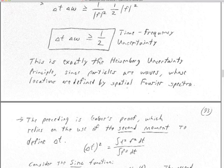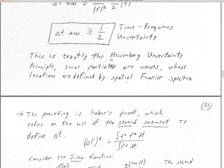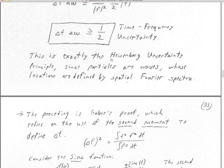This also explains why, if we take enough time span — auto-correlate or cross-correlate those month-long seismograms into empirical Green's functions — we can actually get a reasonable spectrum with physical-looking waves out of it. Because we have a huge time span, we can actually define a fairly narrow band of data there. So that's Gabor's proof of Heisenberg's uncertainty principle.